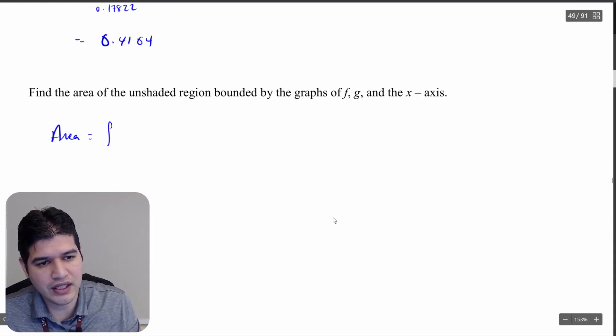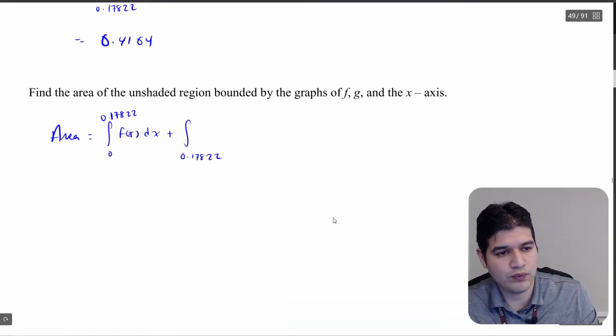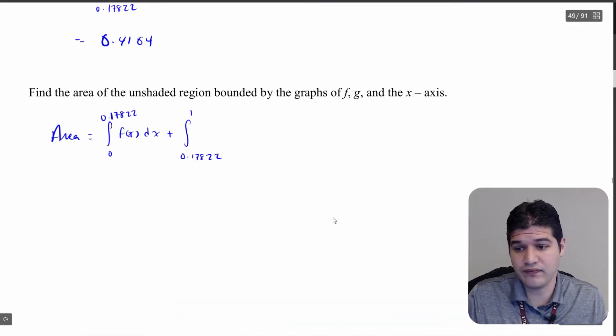But let's write out that we're finding that area of that unshaded region. And we're going here from 0 to that first intersection point, which is 0.17822. And my upper function is f of x minus 0 dx. I'm not going to write out that minus 0. Then we're going to add it to that next one, so 0.17822 and we're going over to the next intersection value, which was 1. And our upper function in this case was g of x dx. And we're going to add it to our last integral, which goes from 1 to...